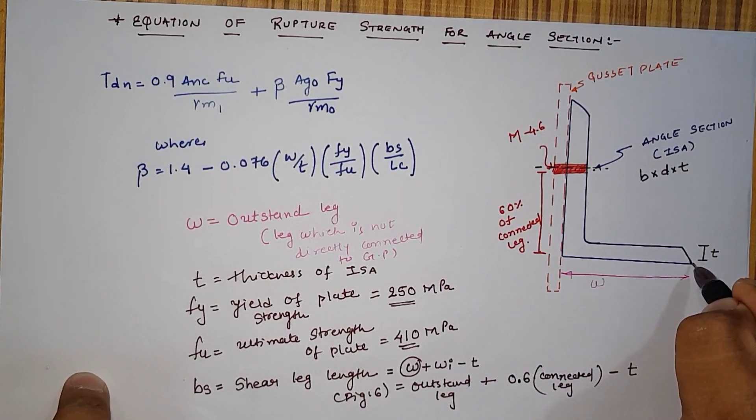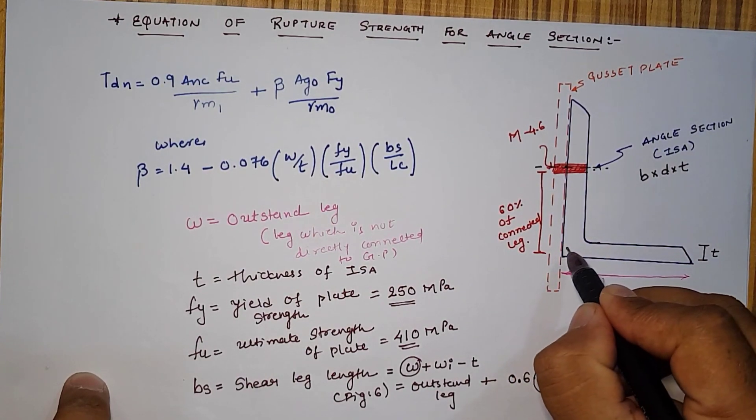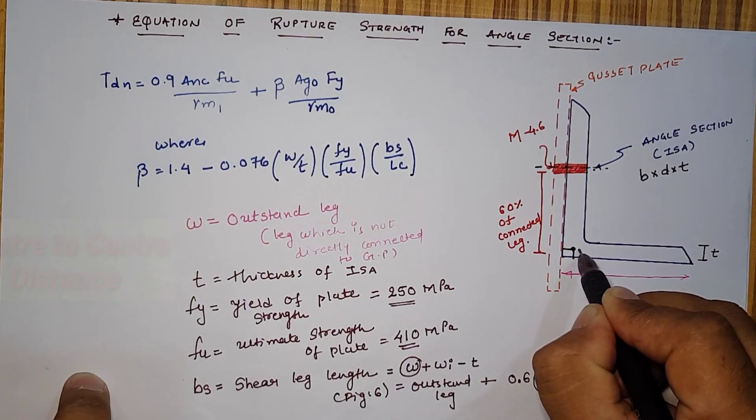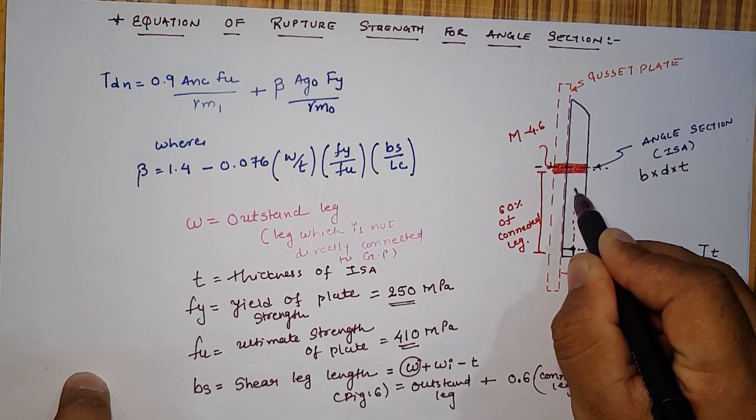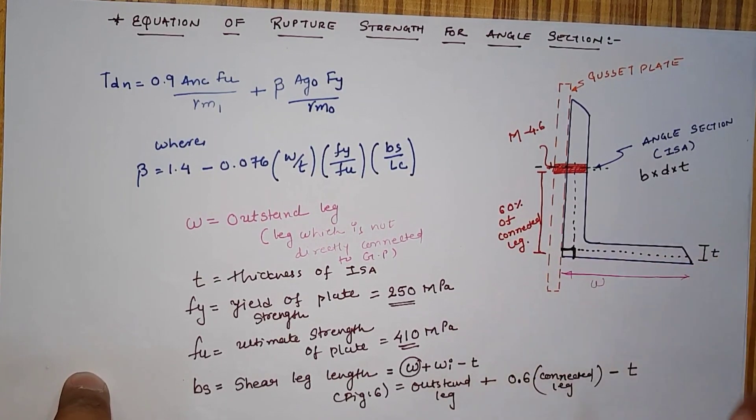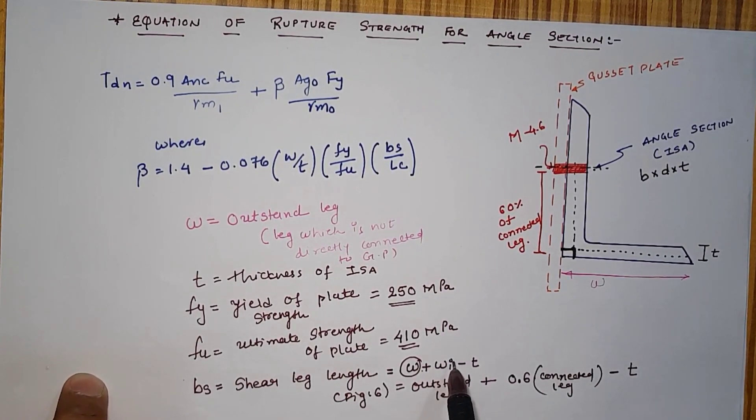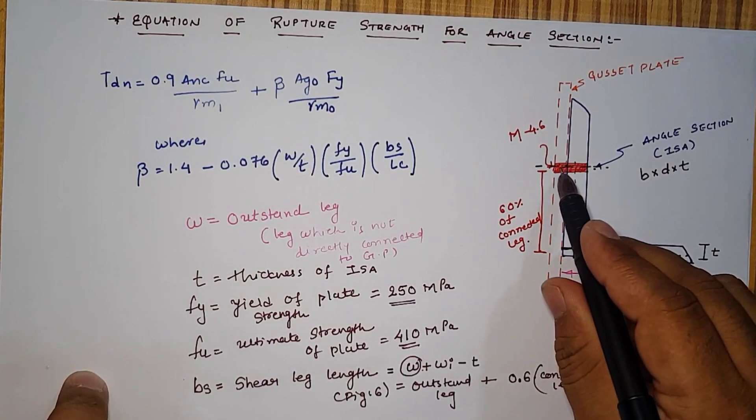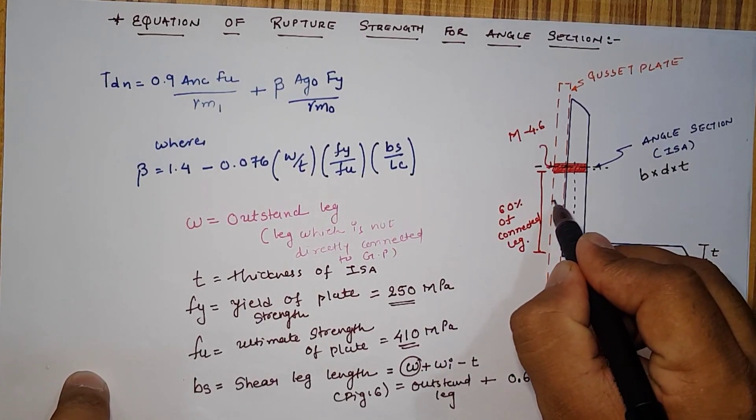Wi is nothing but 0.6 of connected leg minus T. The meaning of minus T is that the distance of W plus Wi minus T indicates that we are assuming this distance from center to center. Our distance is T by 2 from W and T by 2 is from Wi, so total T is removed from the W plus Wi.